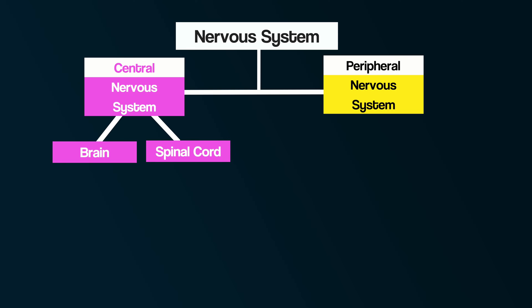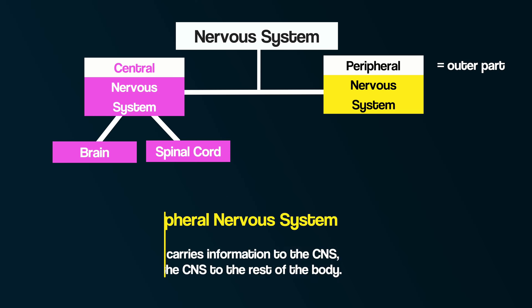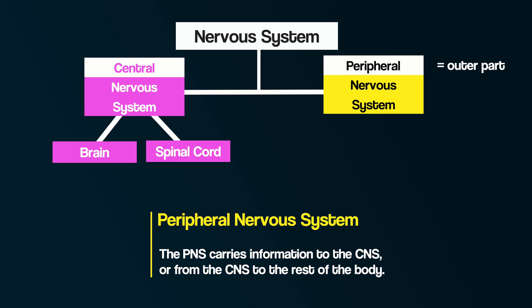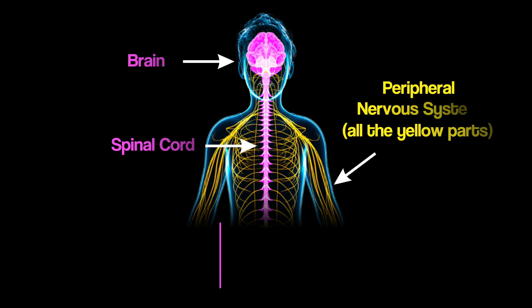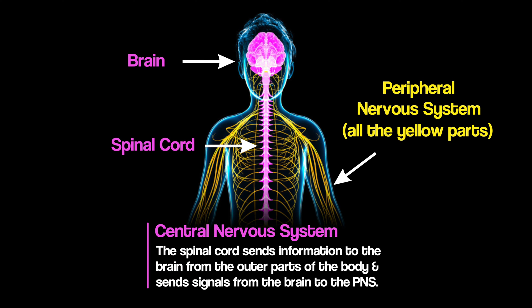Then there is the peripheral nervous system. The word peripheral means on the edge or the outer part. The peripheral nervous system is where nerve cells carry information to or from the central nervous system. The spinal cord is connected to the brain and sends information to the brain from the outer parts of the body — the peripheral nervous system — and sends signals from the brain out to the peripheral nervous system.